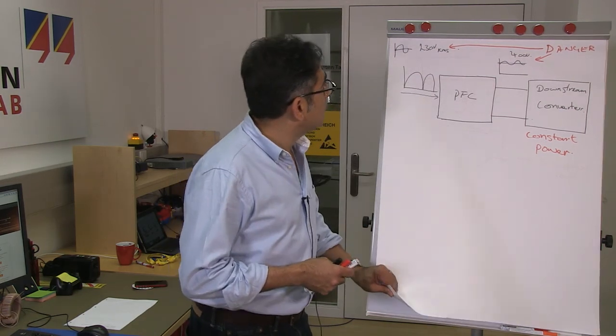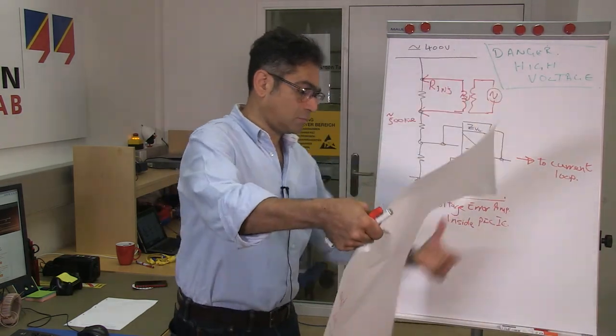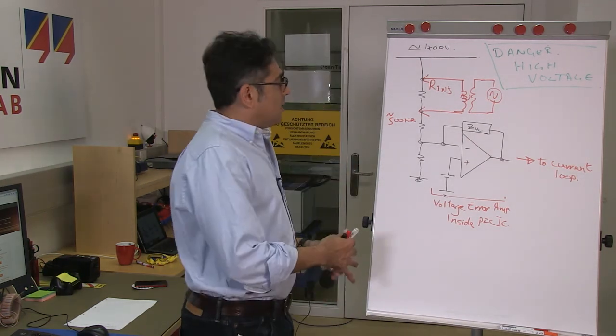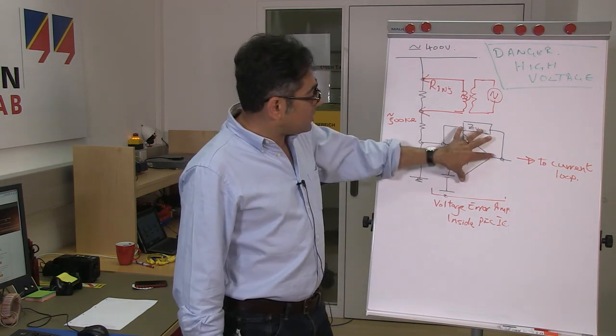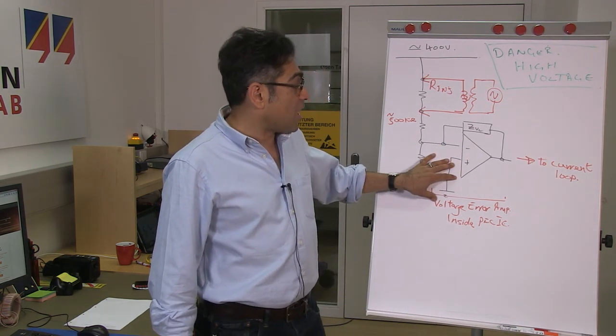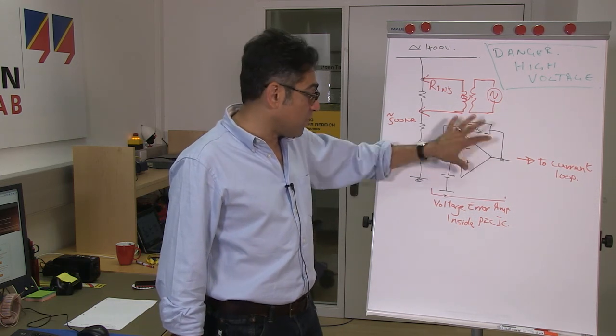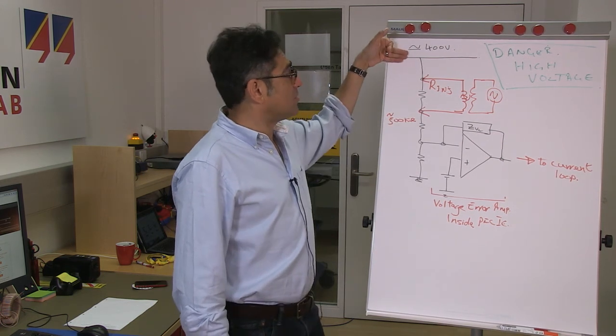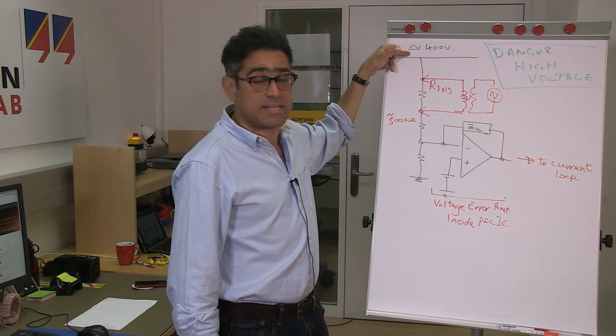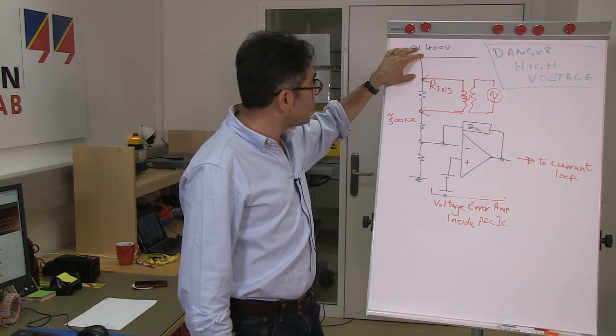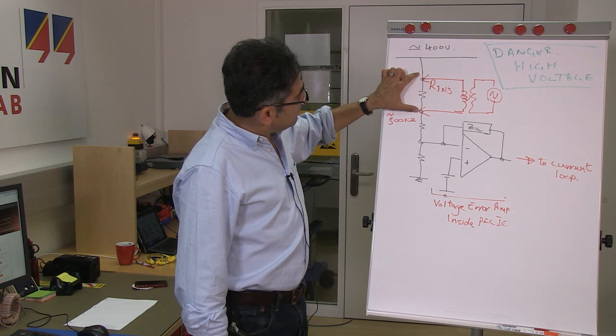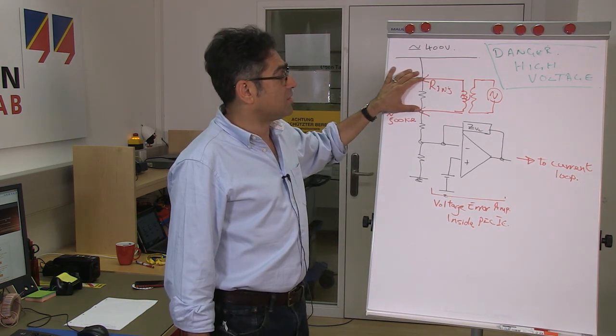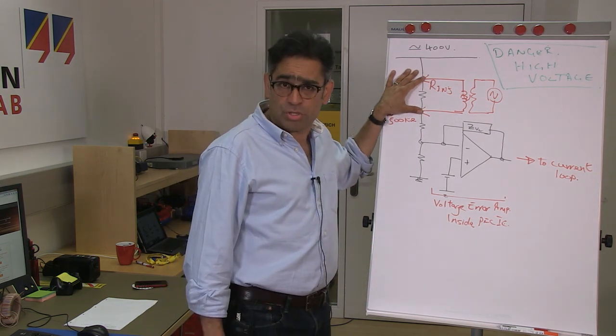And in order to measure it, we have a measurement setup that looks like this. Inside of your power factor correction IC you have an error amplifier. This is the voltage error amplifier, and that is tied to the output of the PFC stage, which is, as I said, around 400 volts. So we put an injection resistor right up here, and then we use the Bode 100 in order to inject a signal, and then we measure the voltage loop.